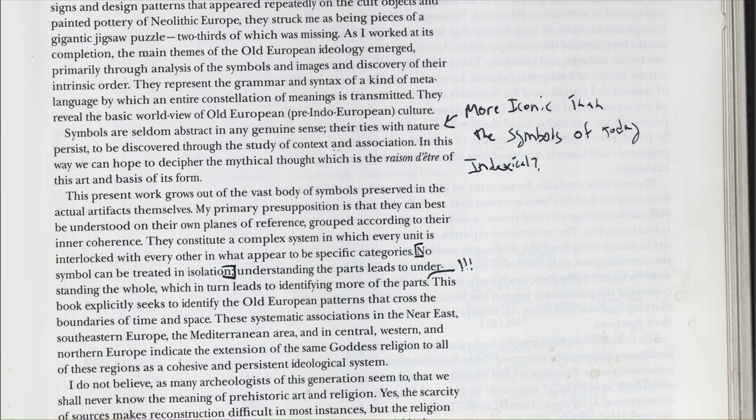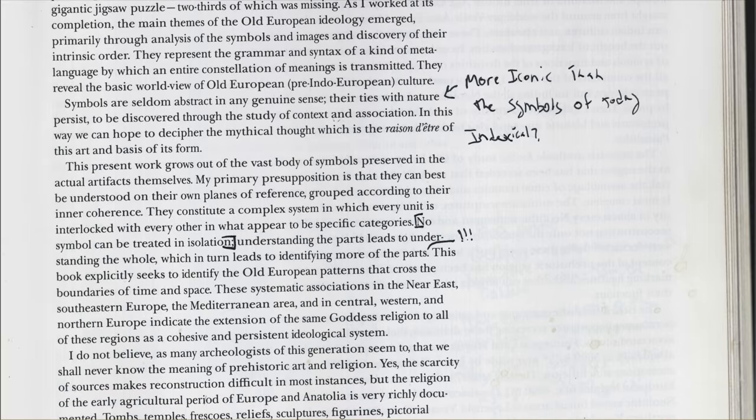This book explicitly seeks to identify the old European patterns that cross the boundaries of time and space. These systematic associations in the Near East, Southeastern Europe, the Mediterranean area, and Central, Western, and Northern Europe indicate the extension of the same goddess religion to all these regions as a cohesive and persistent ideological system.